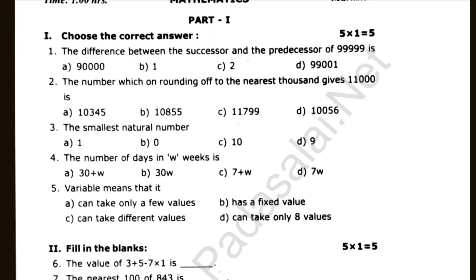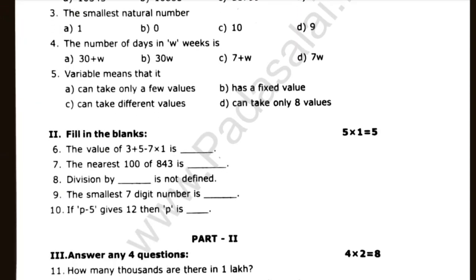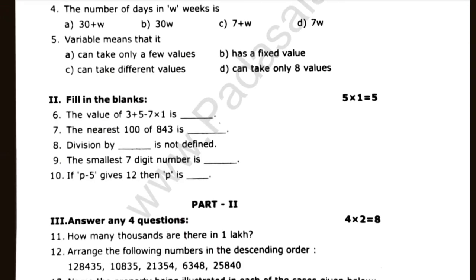We will check the book first. Fill in the blanks: 6, 7, 8, 9, 10. The value of 3 plus 5 minus 7 multiplied by 1 is dash. The nearest hundred of 843 is dash. The division by dash is not defined. We will check the book first.